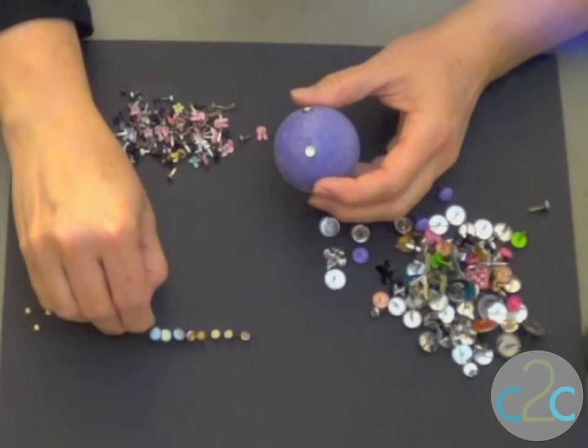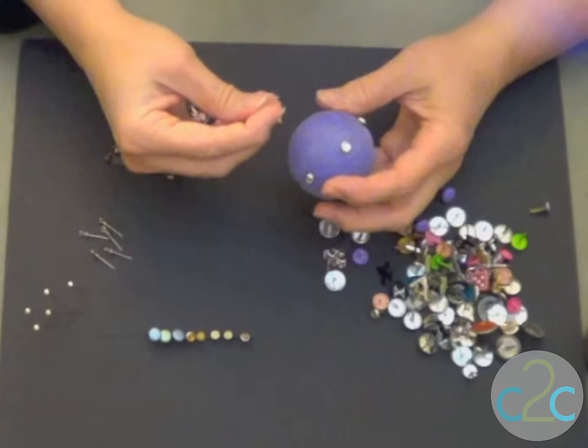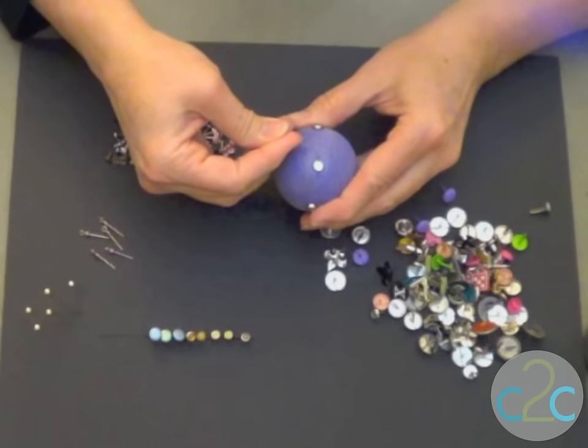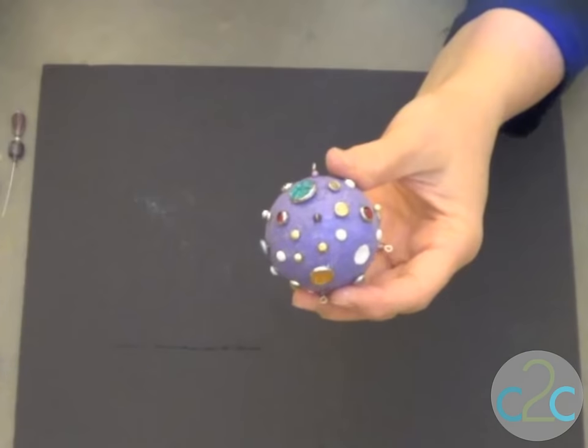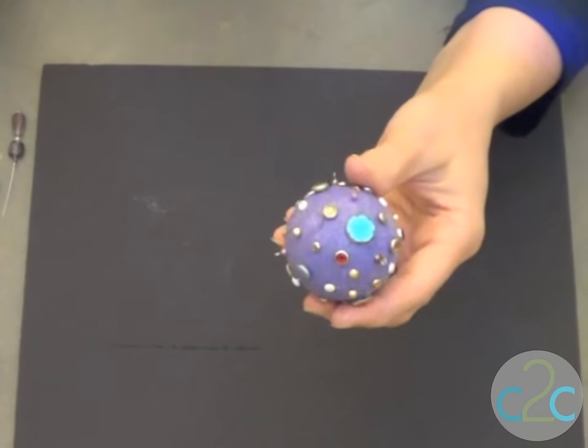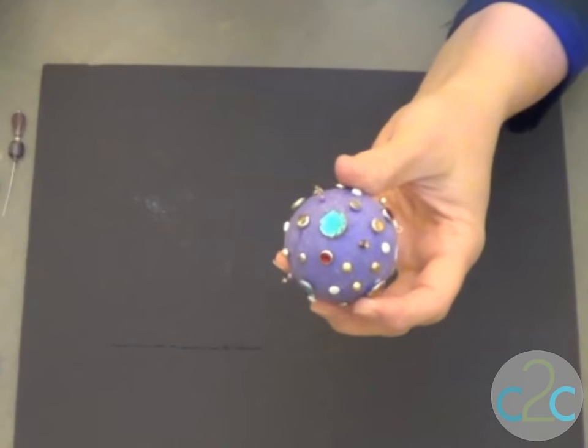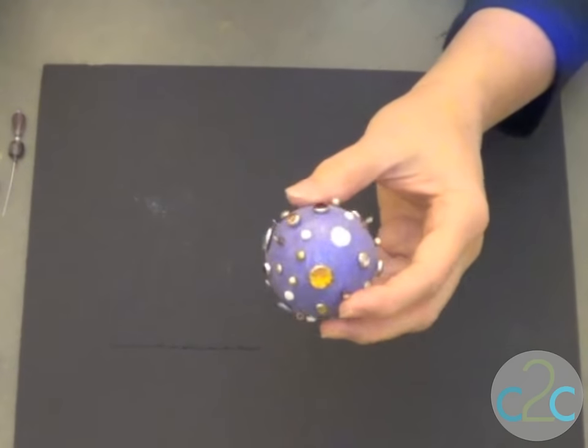We're just going to very carefully, because some brads the prongs are a little bit flimsy, but we're just going to very carefully poke them in. So I think I'll stop right here. I really like how I've got all of the brads and pins dispersed, but you could if you wanted to keep filling in and just make it as dense as you like.